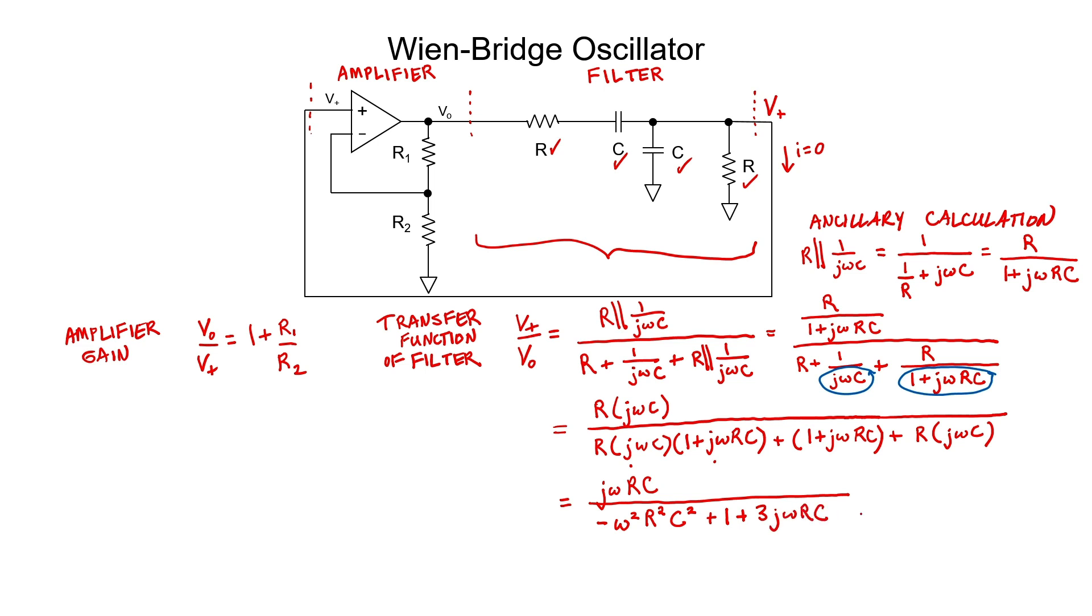We can get some simplification in the denominator because j times j is going to give us minus 1. Because I now have expressions for both the amplifier gain and the transfer function of the filter, I can multiply these two expressions together.